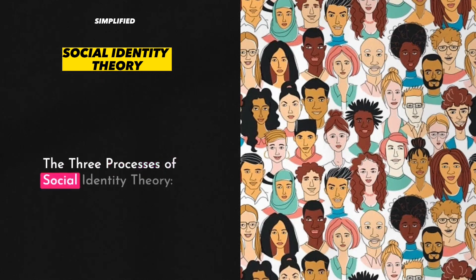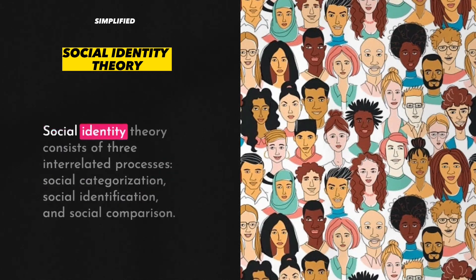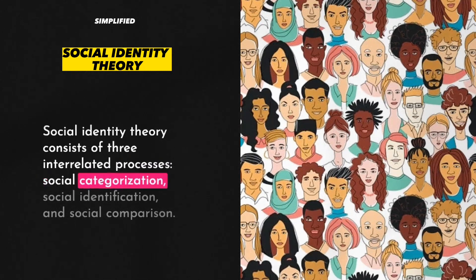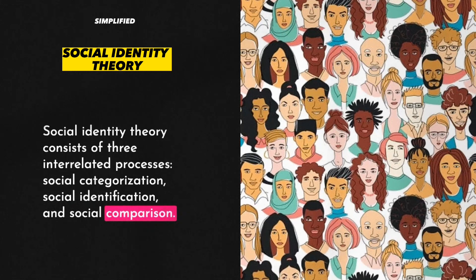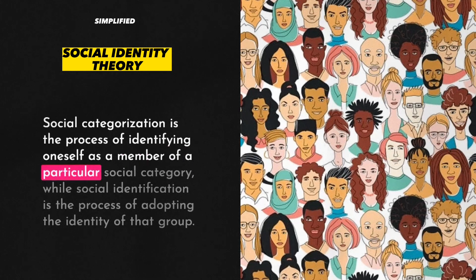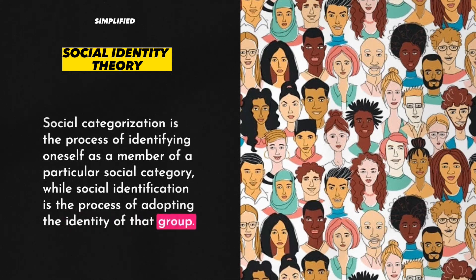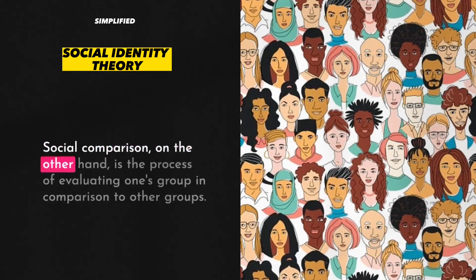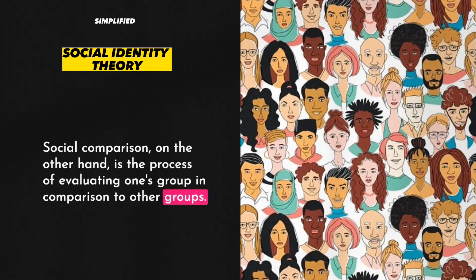2. The Three Processes of Social Identity Theory. Social Identity Theory consists of three interrelated processes: social categorization, social identification, and social comparison. Social categorization is the process of identifying oneself as a member of a particular social category, while social identification is the process of adopting the identity of that group. Social comparison, on the other hand, is the process of evaluating one's group in comparison to other groups.